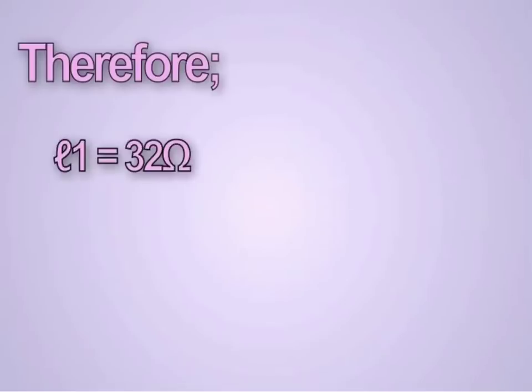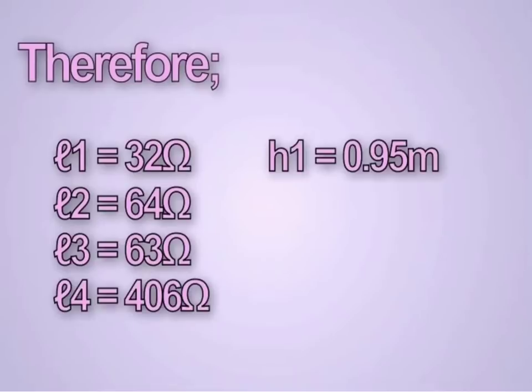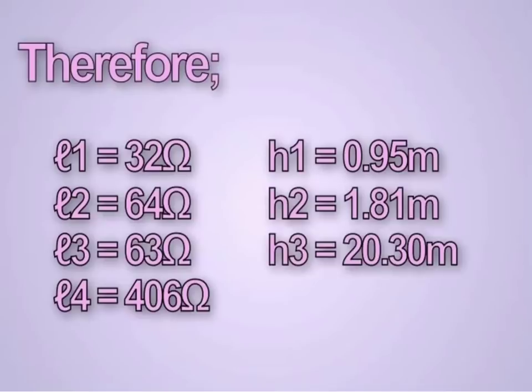Layer resistivity of layer 1 is 32 ohms, the resistivity of layer 2 is 64 ohms, the resistivity of layer 3 is 63 ohms, the resistivity of layer 4 is 406 ohms. While the thickness of layer 1 is 0.95 meter, the thickness of layer 2 is 1.81 meters, and layer 3 is 20.3 meters. So we will see in the next lesson.